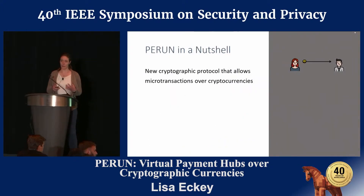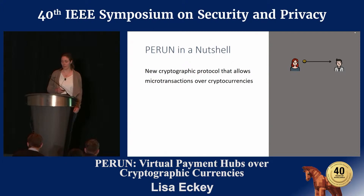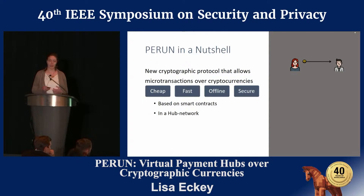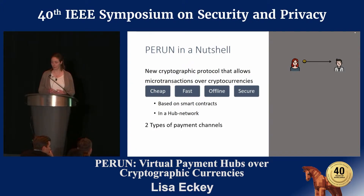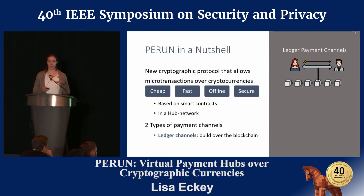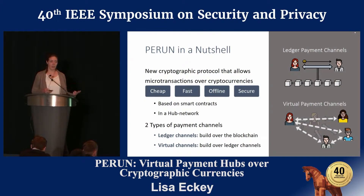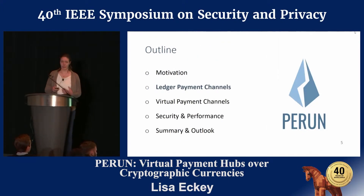To give a short overview of our contribution: the goal is to bring microtransactions to cryptographic currencies, with the properties of being cheap, fast, offline, and secure. The whole system is based on smart contracts and works in a hub-like network where everyone is connected to everyone else through at most one hub. We propose two types of payment channels: a direct ledger channel between two parties based on a smart contract on the blockchain, and a virtual channel which works in this hub network, relying not directly on the blockchain but on two underlying ledger-based channels.